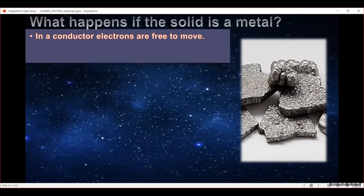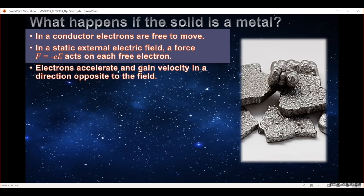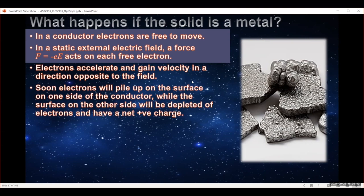Think about what's happening in a metal — we have electrons that are free to move, they are not bound to anything. So if you have a piece of metal in a static electric field, there's going to be a force F given by minus eE, where the little e is the electron charge and the big E is the electric field. Each electron is going to feel that force, it's going to accelerate them, they're going to gain velocity and move in the opposite direction to the field. They're going to gather on one side, while the other side of the material gets more and more positive as its electrons are pushed over. So we get a pile-up of electrons on the surface of the metal on one side, and a surface that is depleted in electrons and has a positive charge.